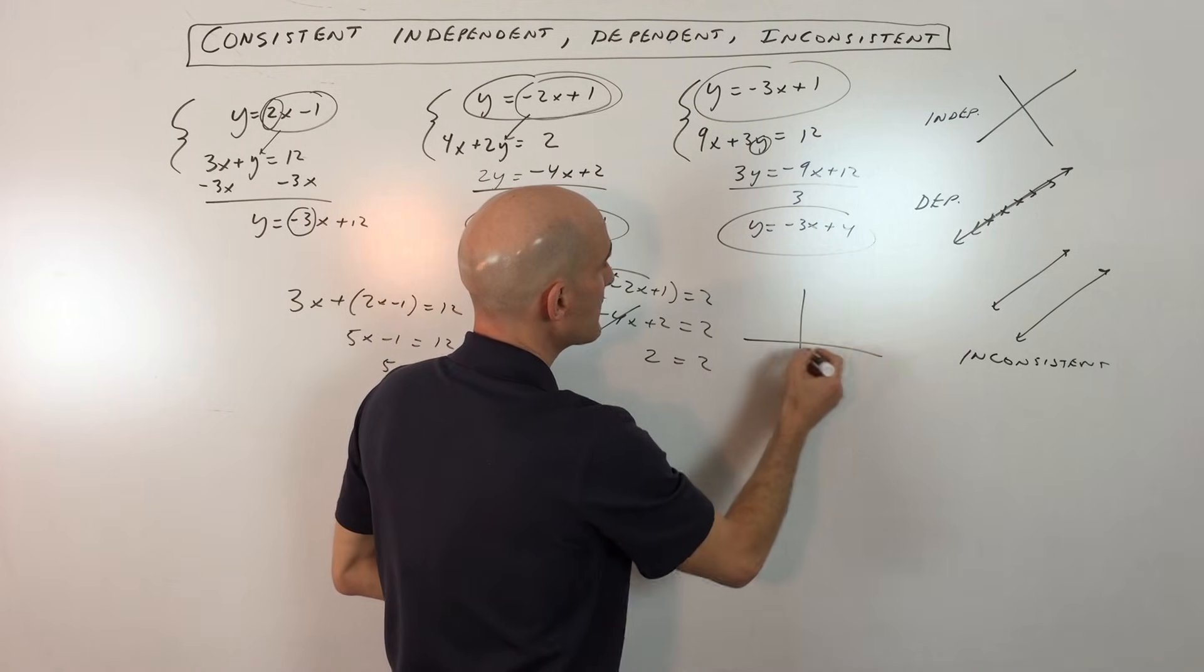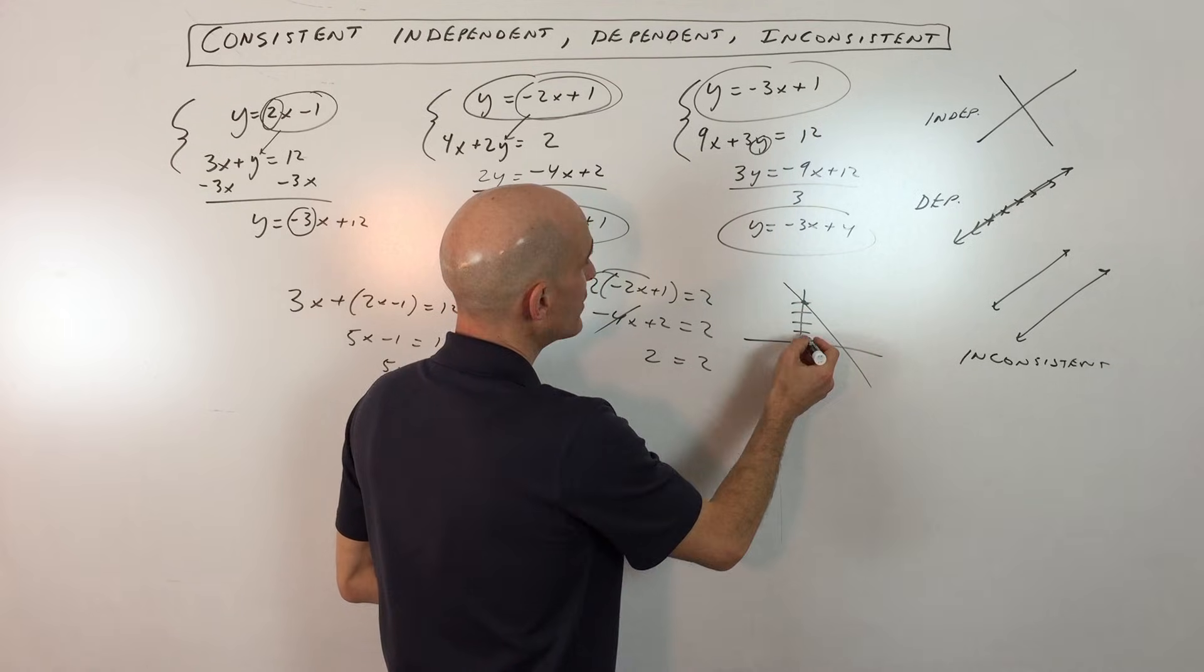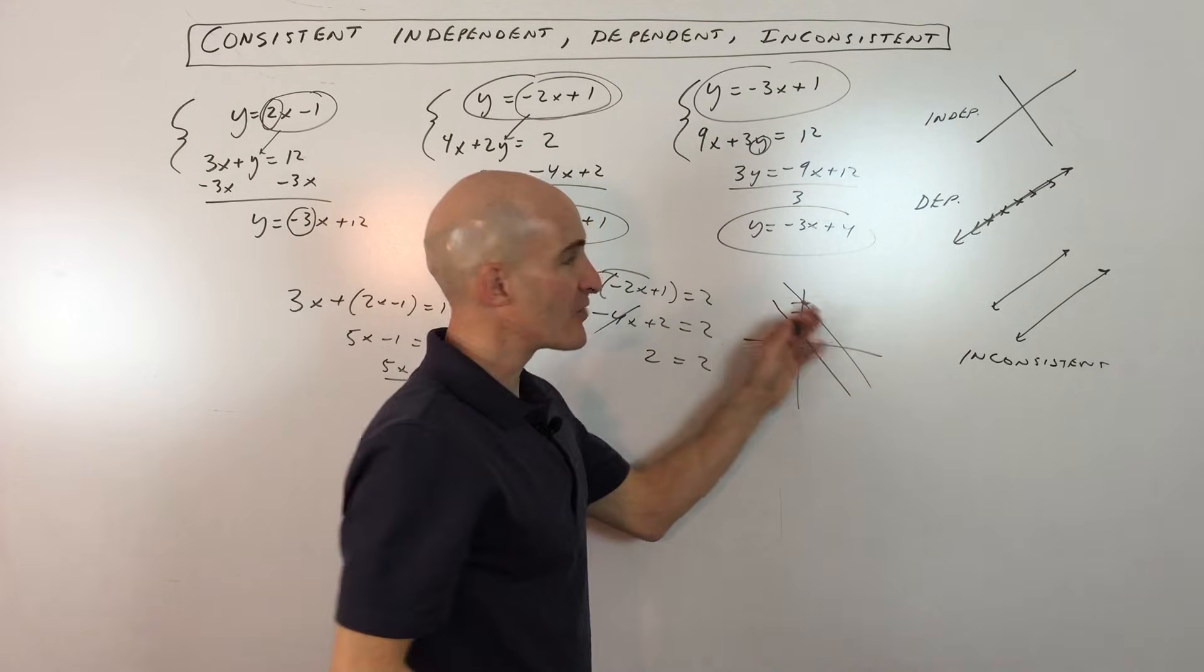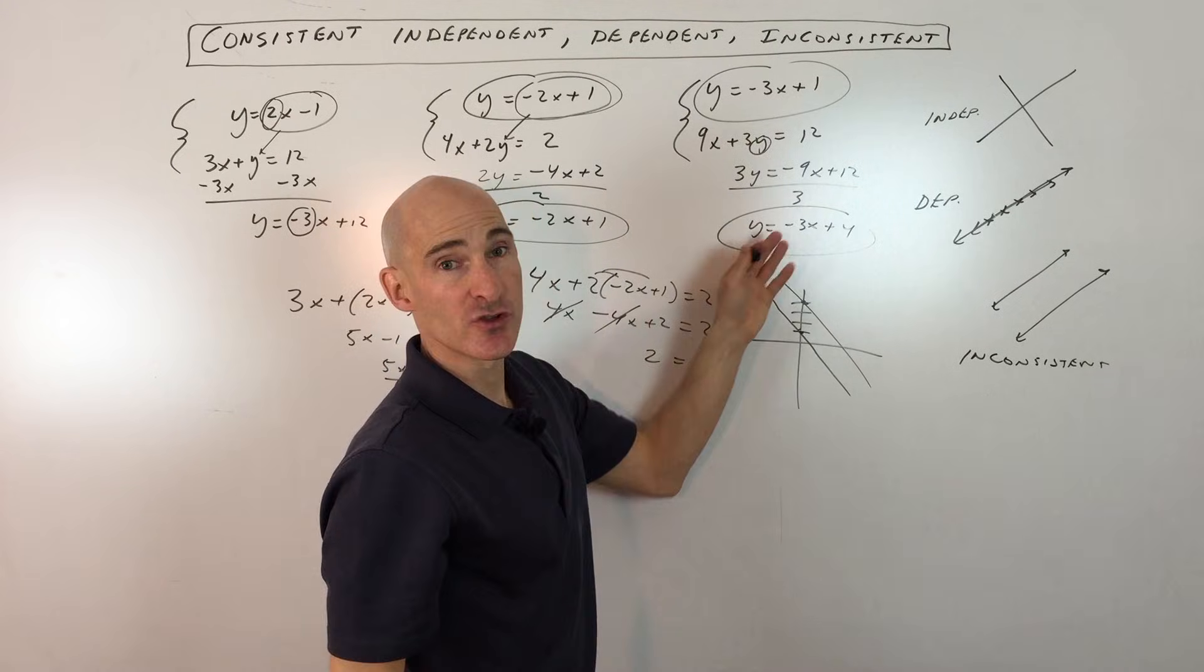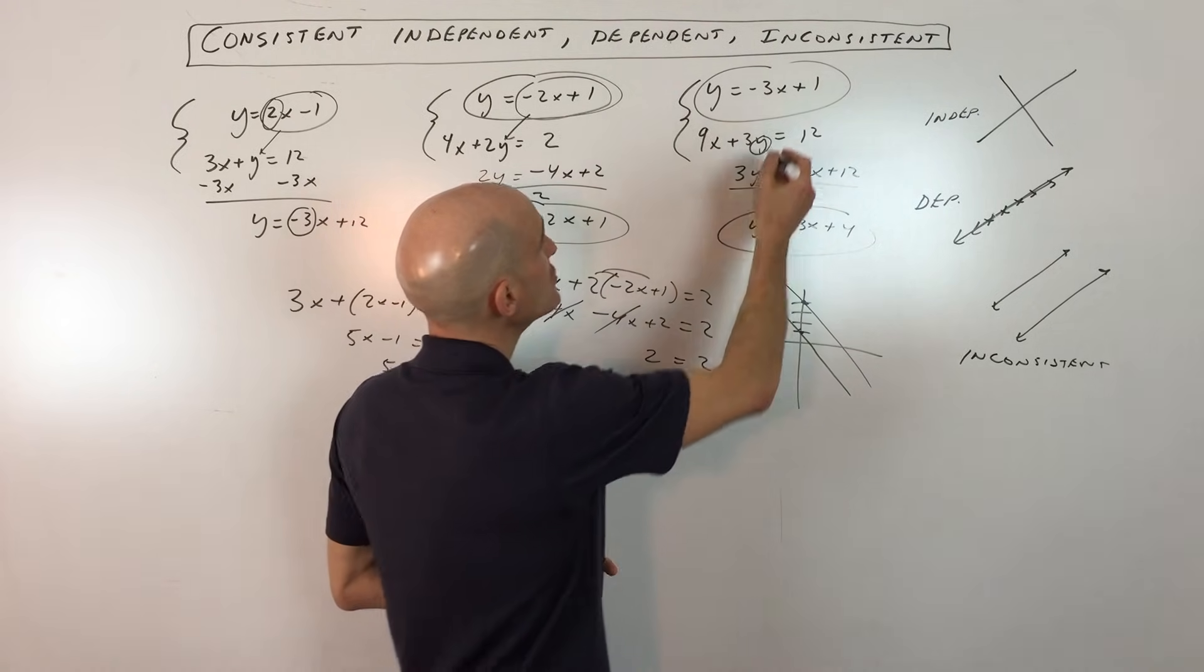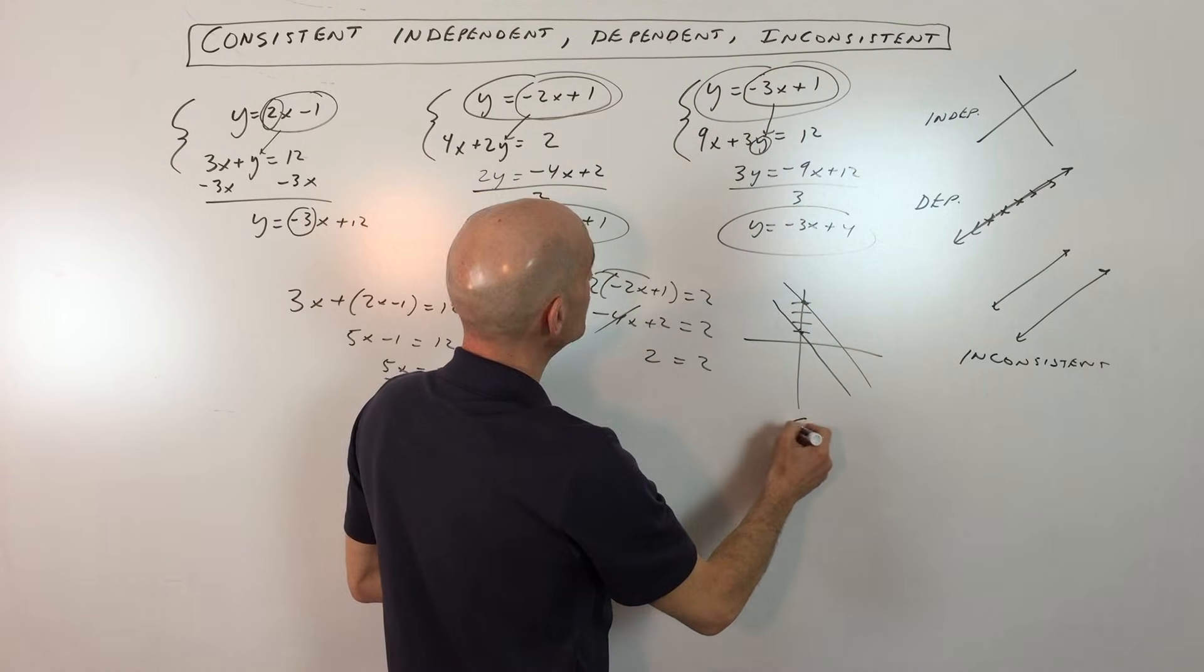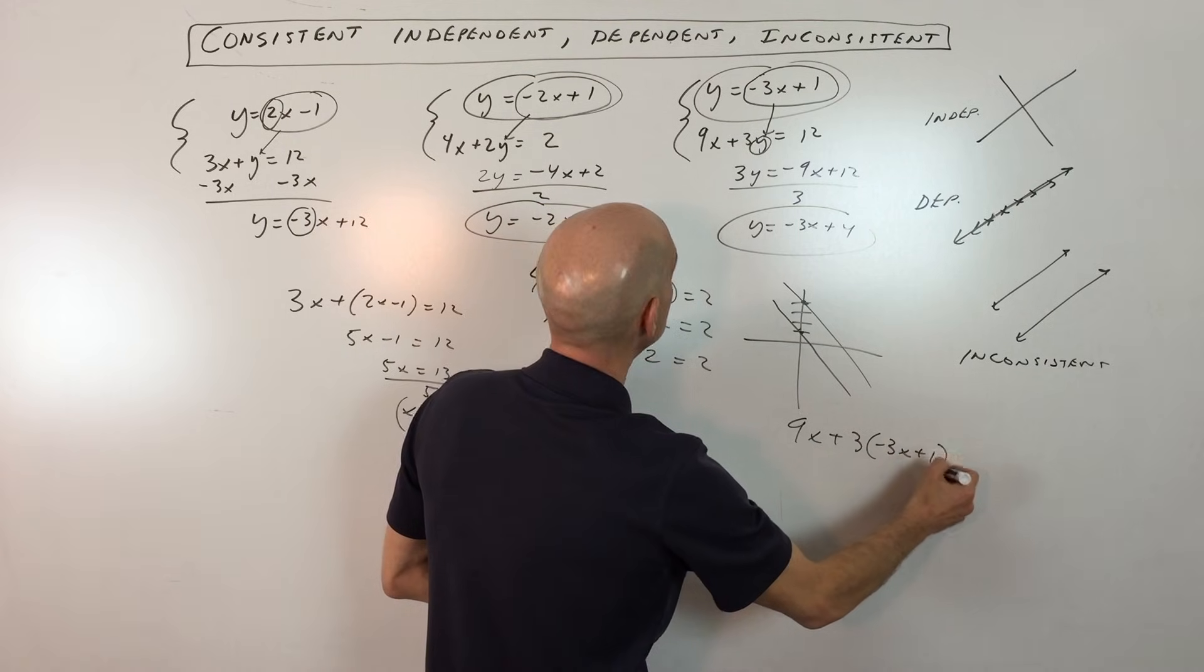If we were to graph these, so one's up here at positive 4 and it has a negative 3 slope, and one here is crossing at positive 1 and it has a negative 3 slope. And you can see they're not going to cross. But if you didn't want to do this graphing method or do the slope intercept form, what you could do is you could do like we've been doing. Take this quantity here, substitute it in for y in the second equation, and let's just see what happens. So I'm just doing the substitution method.